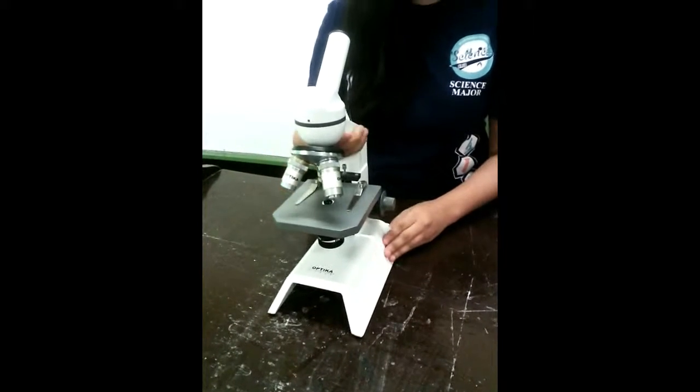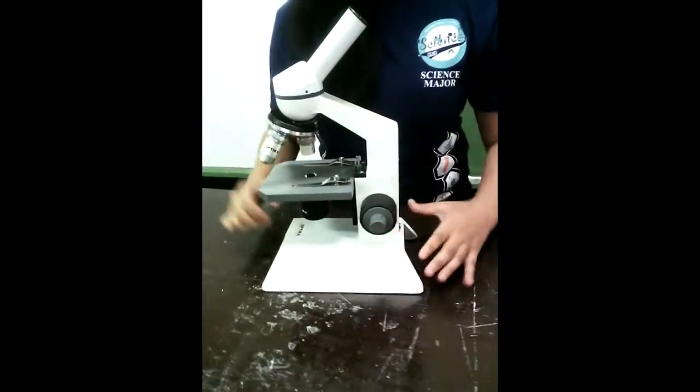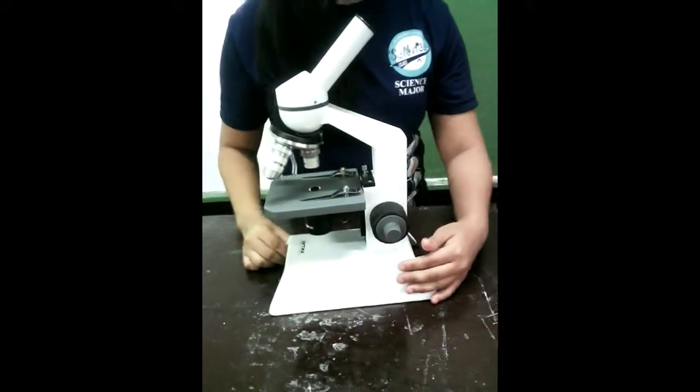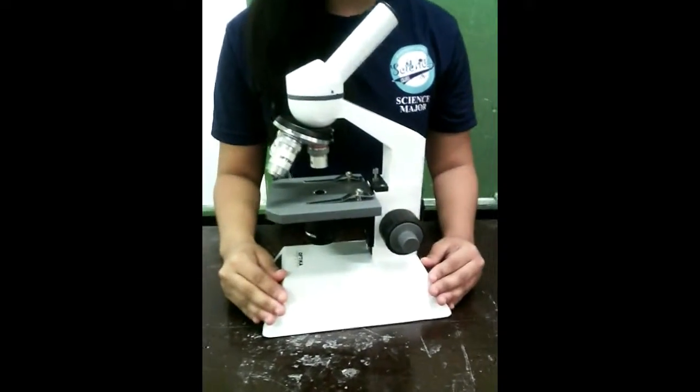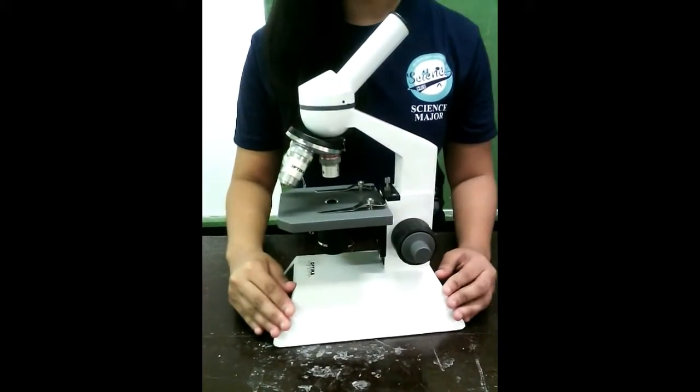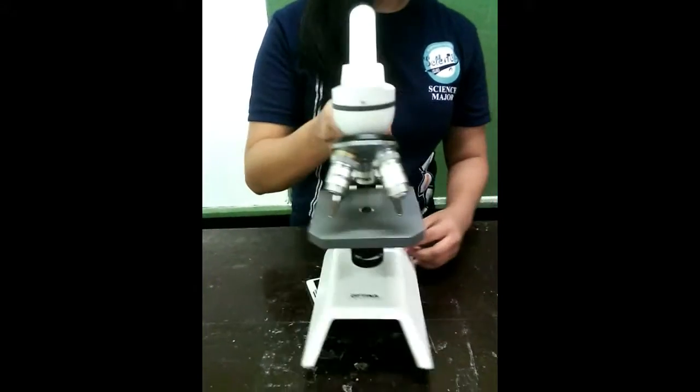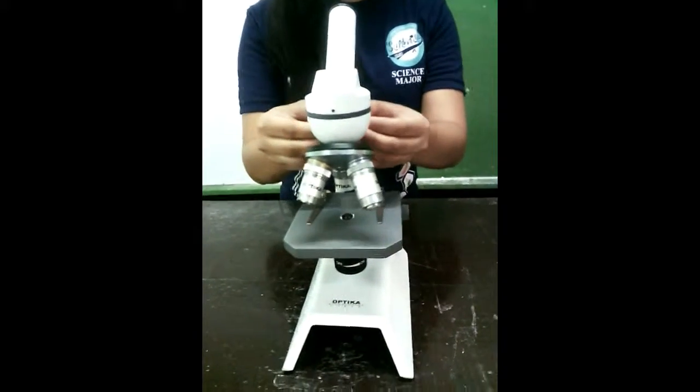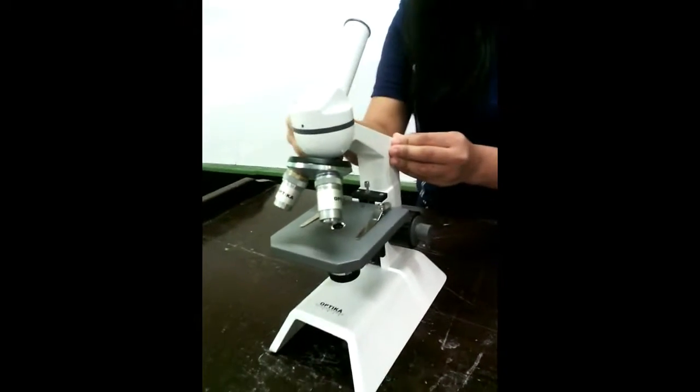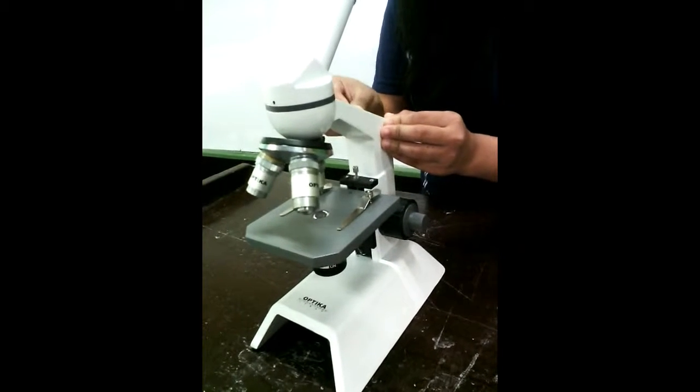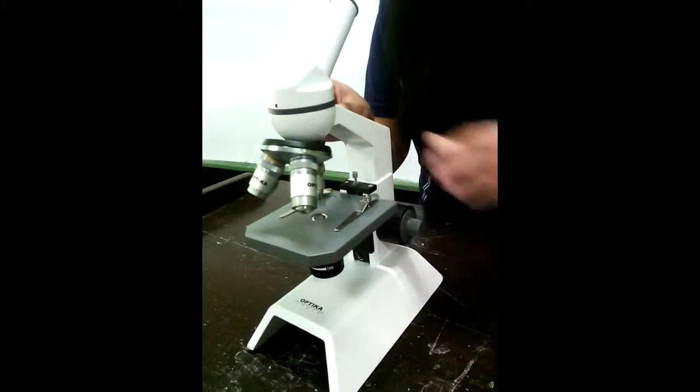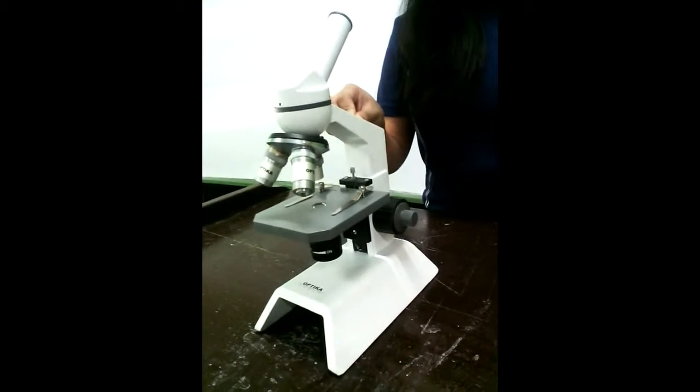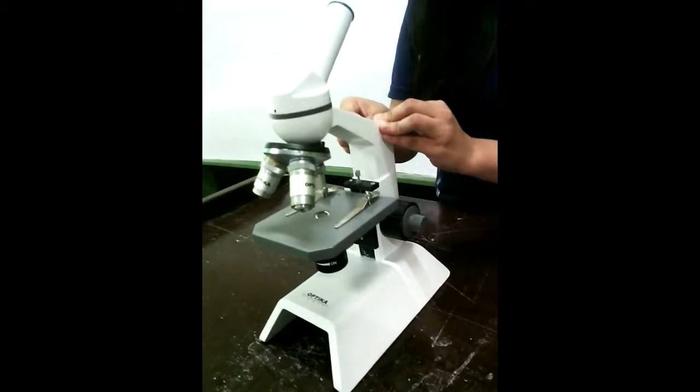This is the base. This is the base of the microscope. This is where the microscope firmly rests. This is the arm of the microscope, in which the arm connects the base and the body tube together. It serves as a handle for compound microscope in carrying the microscope.